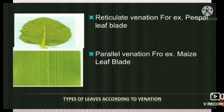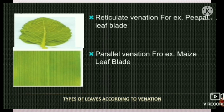In leaves, we can see two types of venation. The first one is reticulate venation and the second one is parallel venation. For example, reticulate venation can be observed in the peepal leaf blade, and parallel venation can be observed in the maize leaf blade.